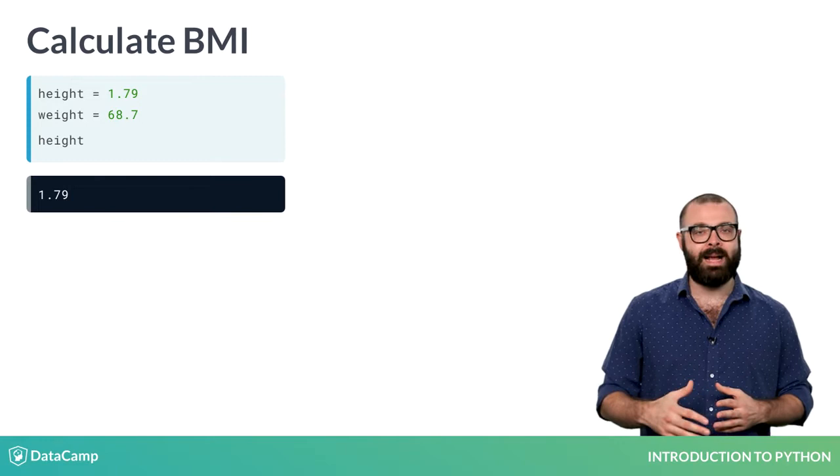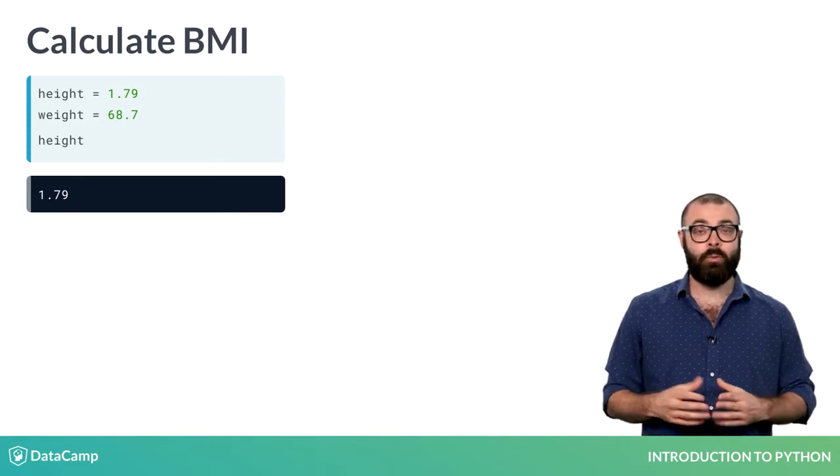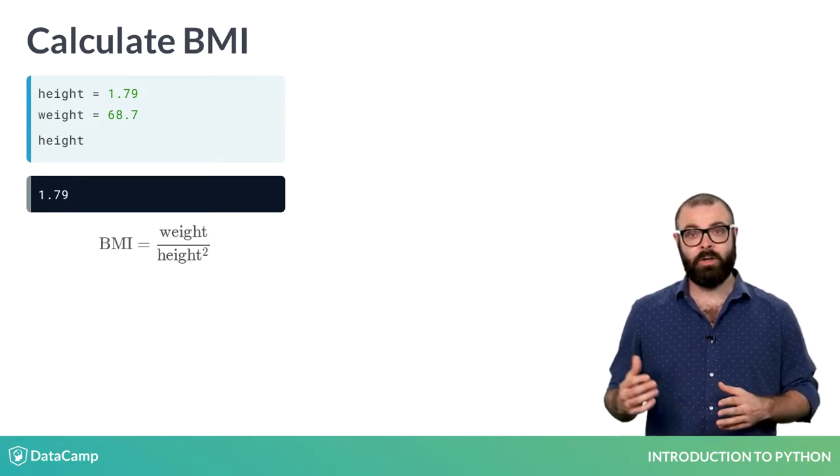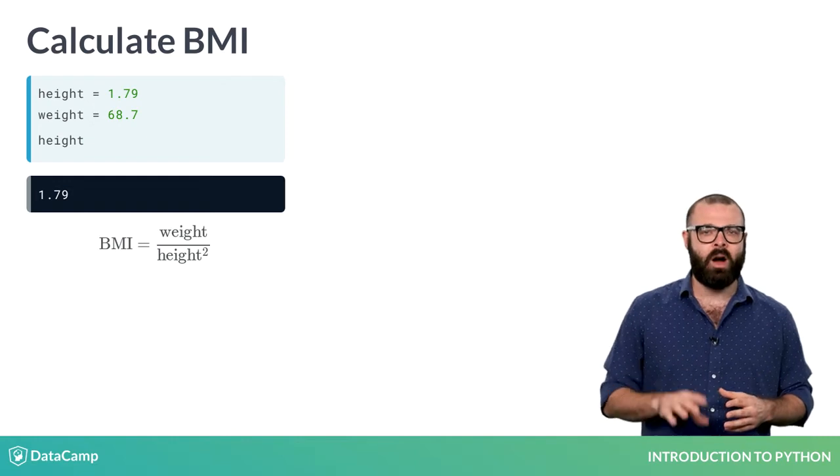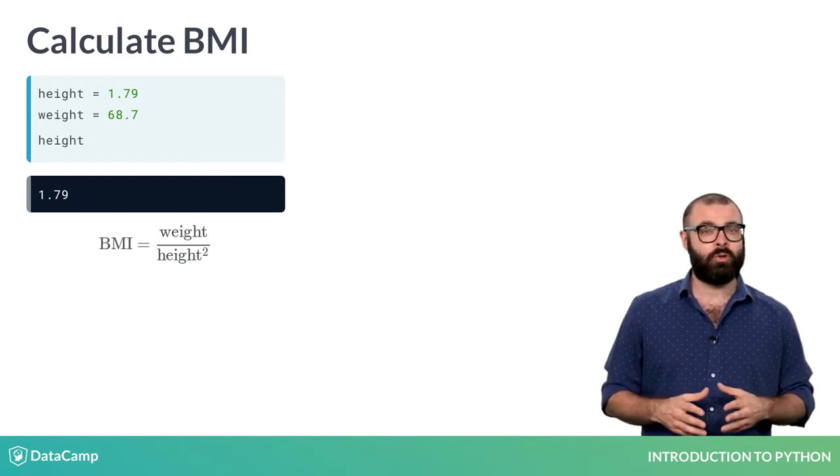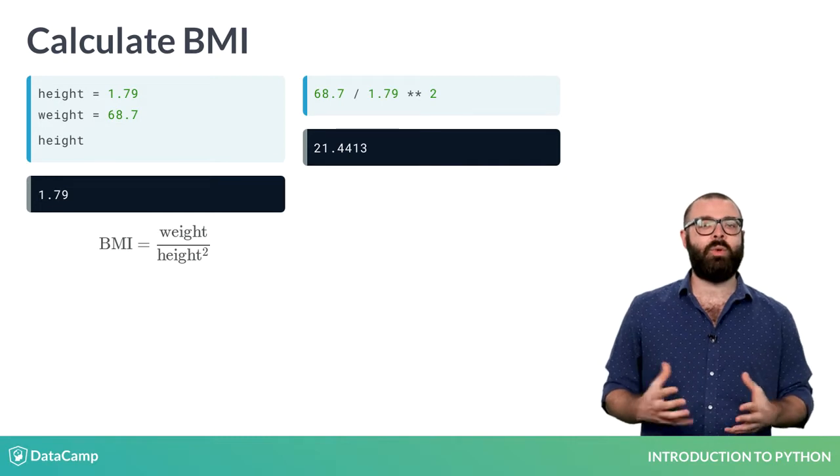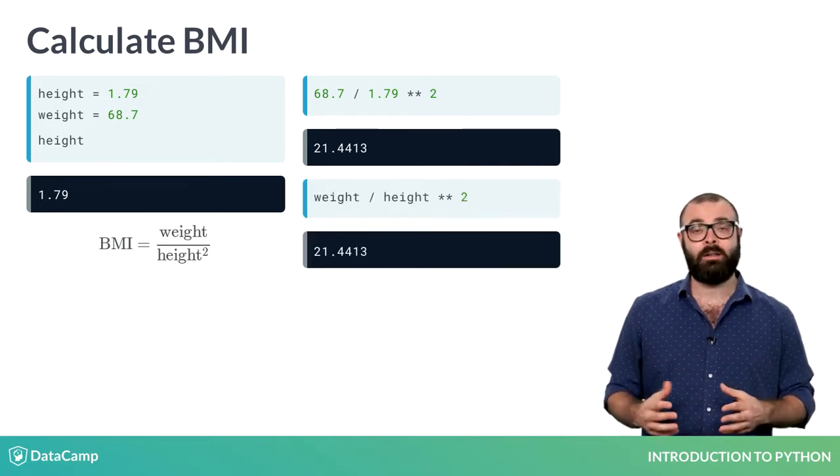Let's now calculate the body mass index or BMI, which is calculated as follows, with weight in kilograms and height in meters. You can do this with the actual values, but you can just as well use the variables height and weight like here.